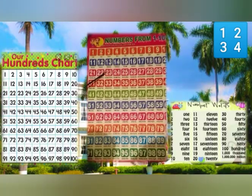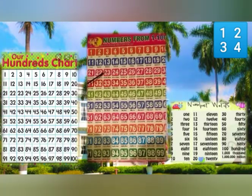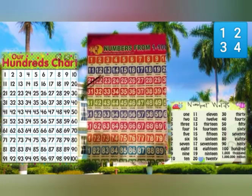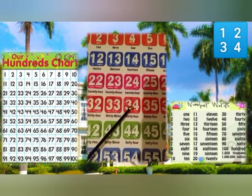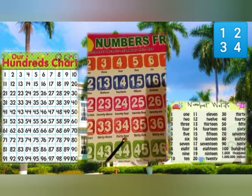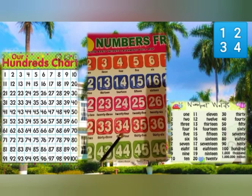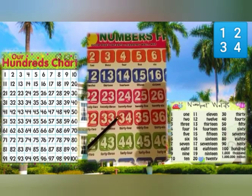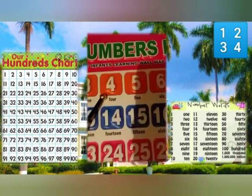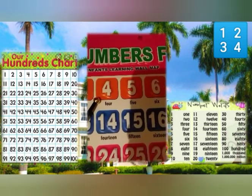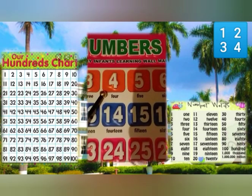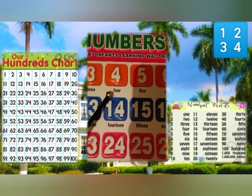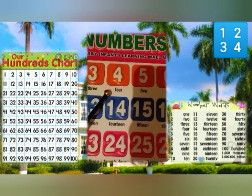This is my number chart. Each number has a number name. For example, this is thirty-four. The number name is at the bottom. Thirty-four is a two-digit number. This is numeral four. The number name is at the bottom. It is a one-digit number.